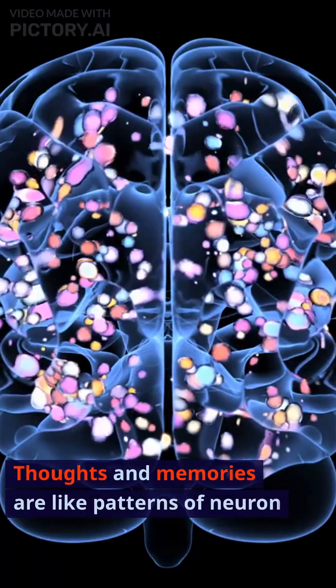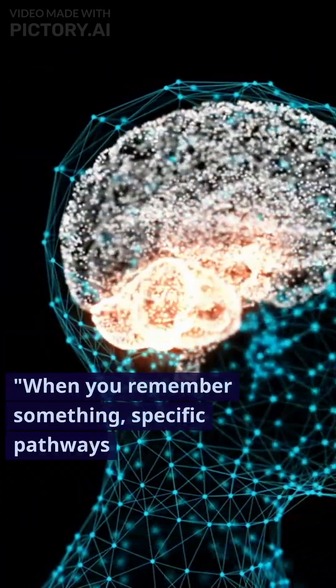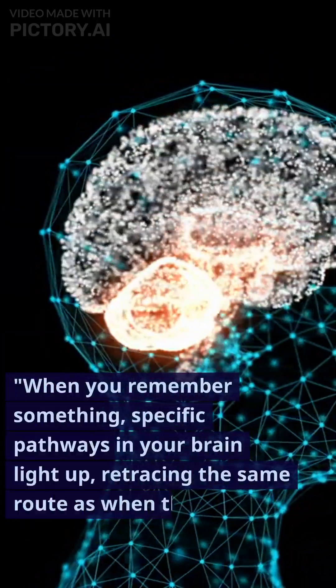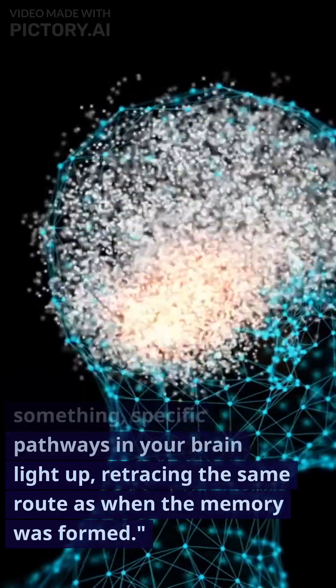Thoughts and memories are like patterns of neuron activity. When you remember something, specific pathways in your brain light up, retracing the same route as when the memory was formed.